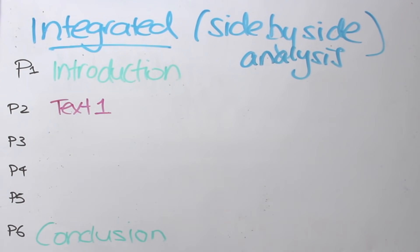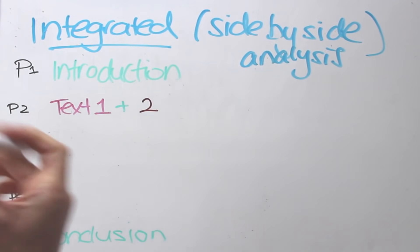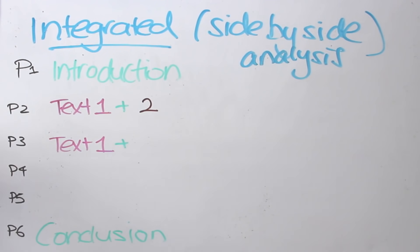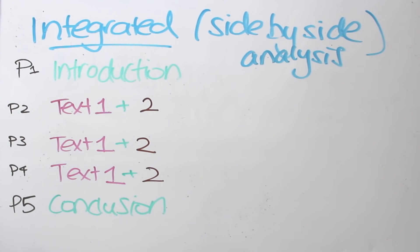But for paragraphs two, three, and four, what you'll find is that you'll be writing about both text one and text two at the same time. So you can see here how it starts to get a little bit more advanced because you have to deal with both texts at the same time.